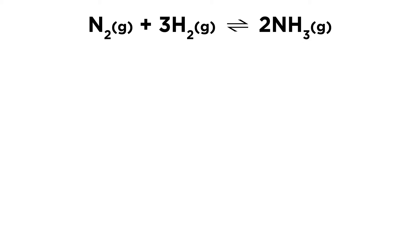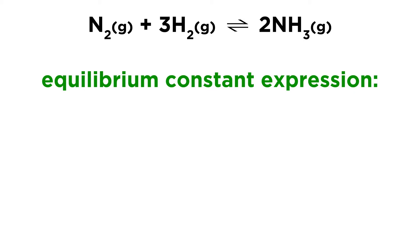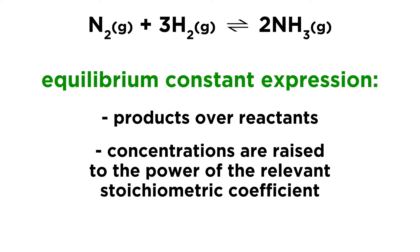So this is a very straightforward situation. Here is our equilibrium. Now the first thing we want to do is generate our equilibrium constant expression. Recall that will involve placing the concentrations of the products over the concentrations of the reactants, and then the concentrations are going to be raised to the power of the relevant stoichiometric coefficient. So whatever the coefficient is on a substance, the concentration of that substance will be raised to that power.